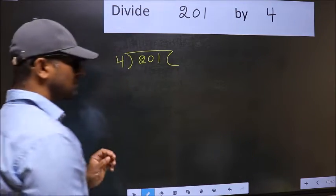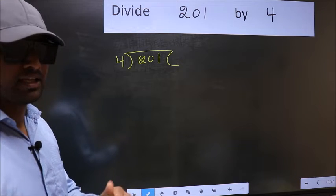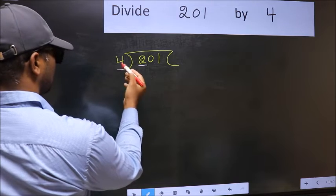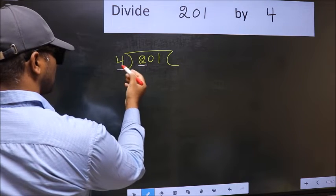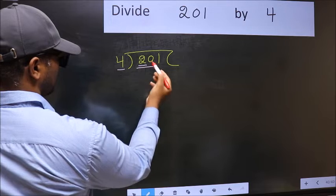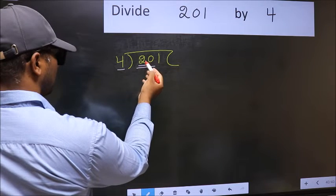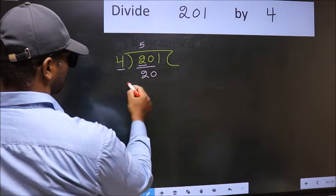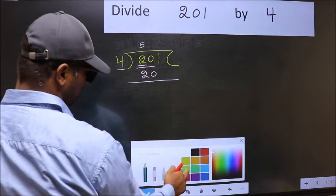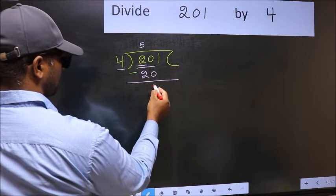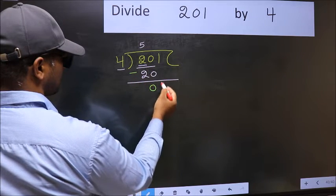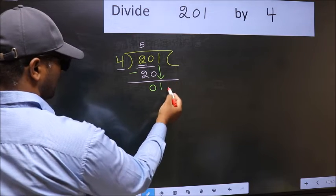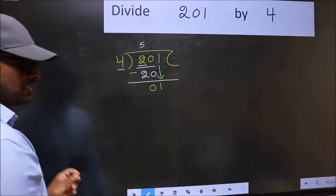This is your step one. Next, here we have 2 and here 4. 2 is smaller than 4, so we should take two numbers: 20. When do we get 20 in 4 table? 4 fives 20. Now you should subtract 20 minus 20, 0. After this, bring down the beside number, so one down. After this step, the mistake happens.